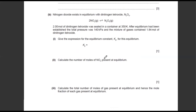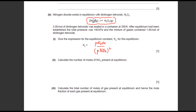Now moving to Kp questions. Write the expression for Kp for the reaction 2NO2 ⇌ N2O4. The Kp expression is the pressure of the product N2O4 — there's only one mole so it's to the power of one — divided by the pressure of the reactant NO2 squared, because the coefficient becomes the power. So it's: Kp = P(N2O4) / [P(NO2)]².